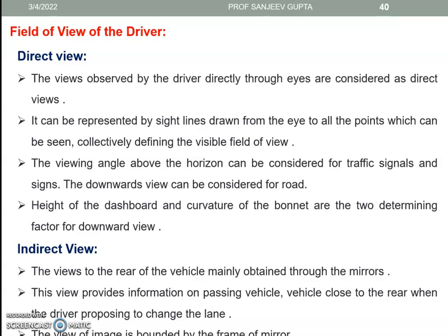Field of view of the driver — direct view or indirect view. Direct view: the views observed by the driver directly through the eyes are considered direct views. They can be represented by sight lines drawn from the eye to all points which can be seen, collectively defining the visual field of view. The upward angle above the horizon can be considered for traffic signals and signs; the downward view can be considered for the road. The height of the dashboard and curvature of the bonnet are two determining factors for the downward view. Indirect view: the views of the rear of the vehicle are mainly obtained through mirrors. This view provides information on passing vehicles and vehicles close to the rear when the driver proposes to change lane; the view of the image is bounded by the frame of the mirror.